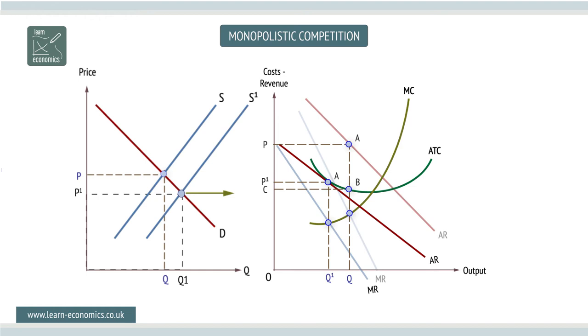In the real world, many markets resemble monopolistic competition, including small high street retailers and specialist services such as hairdressers and garage services.